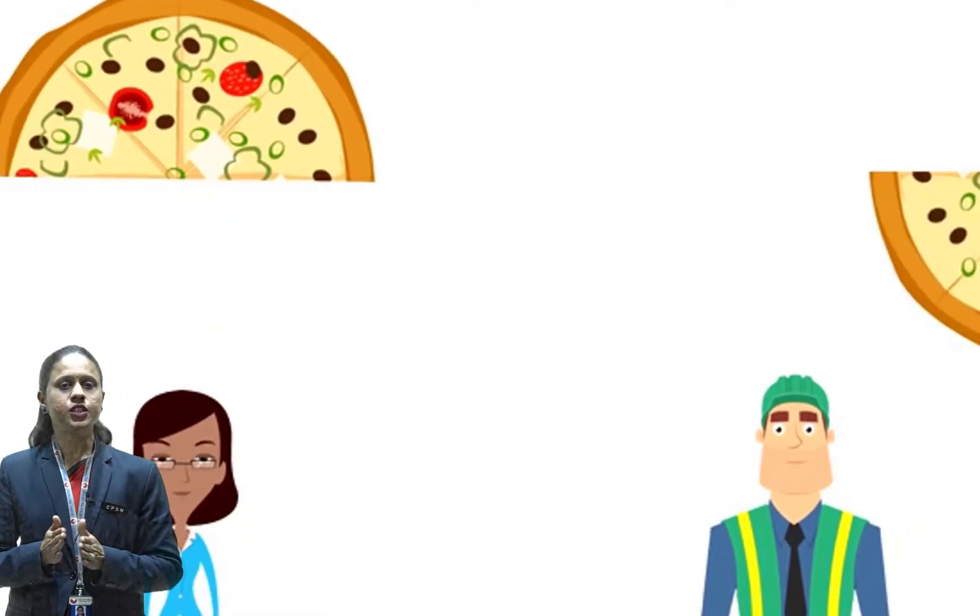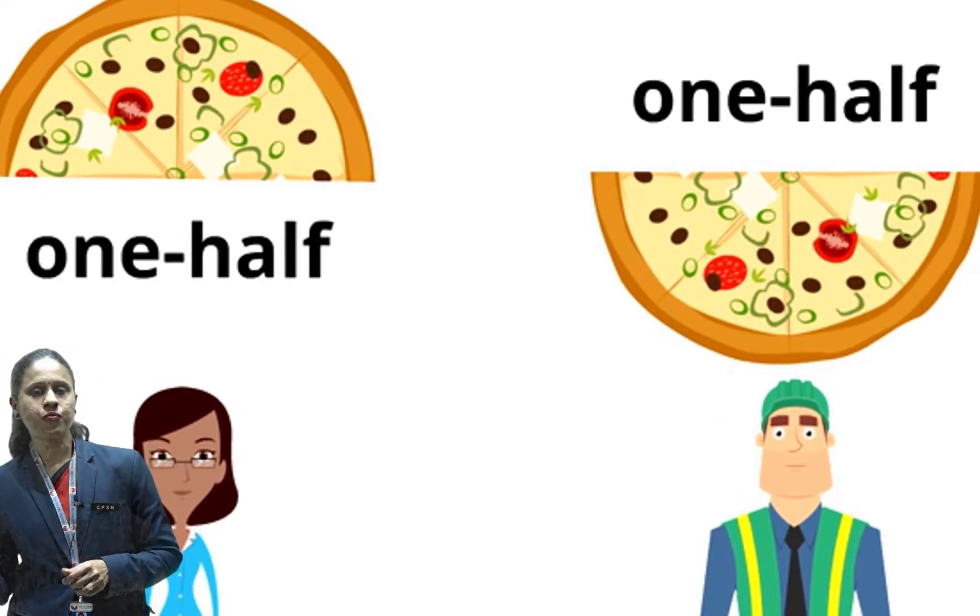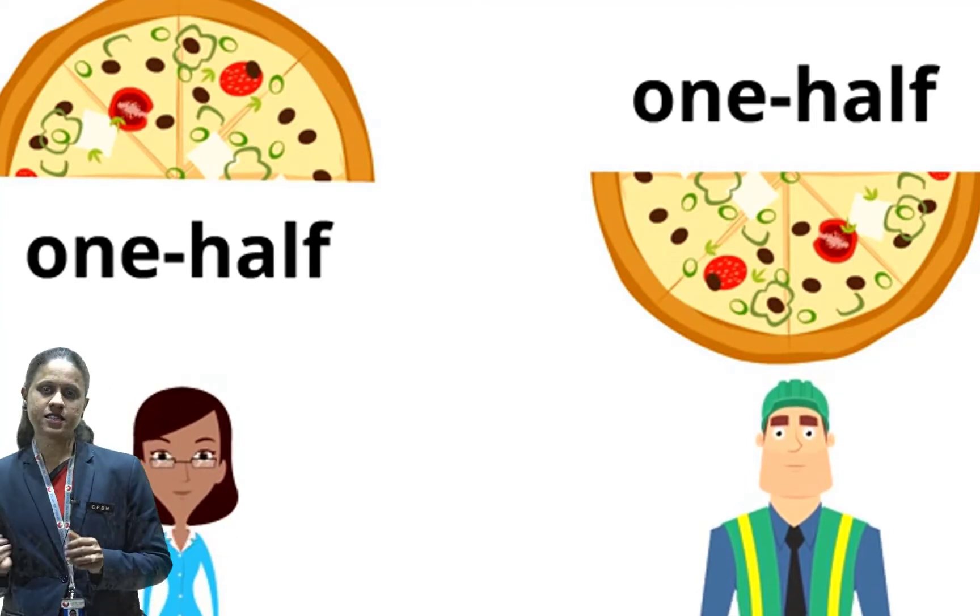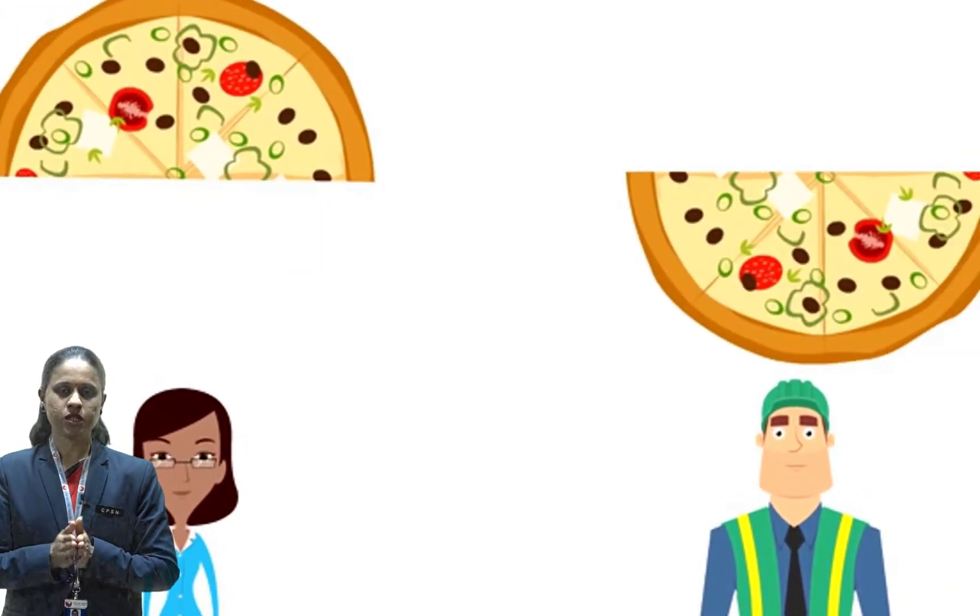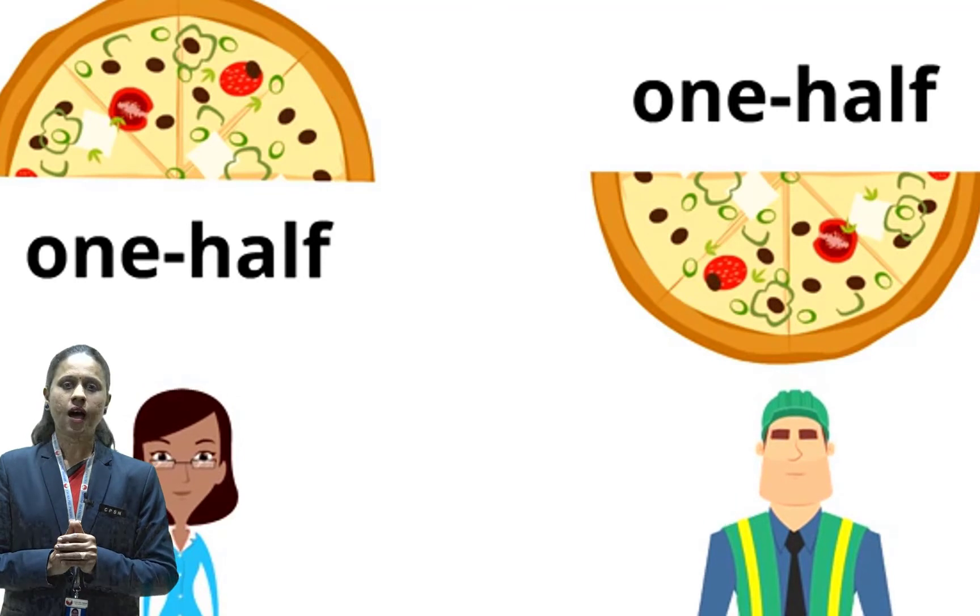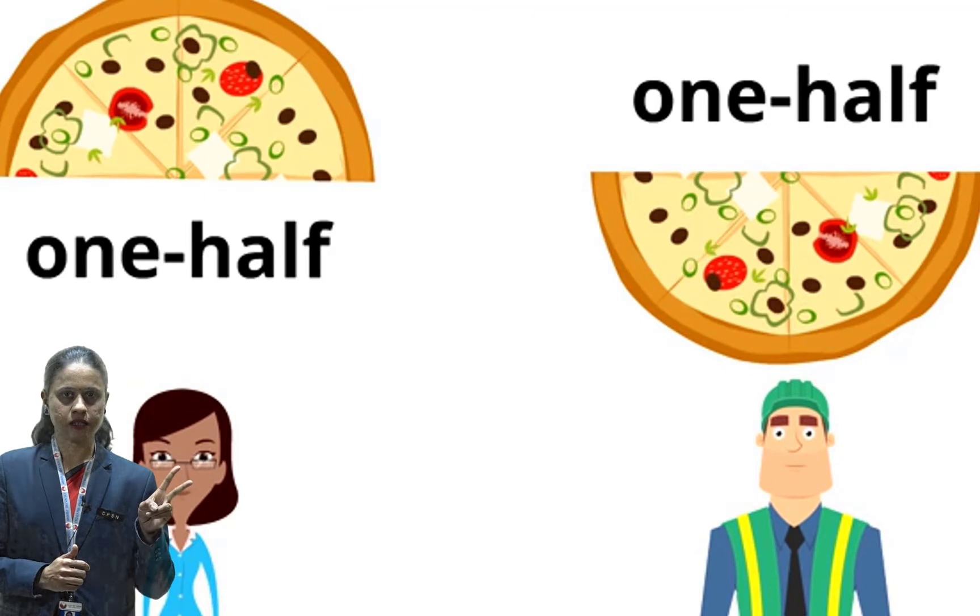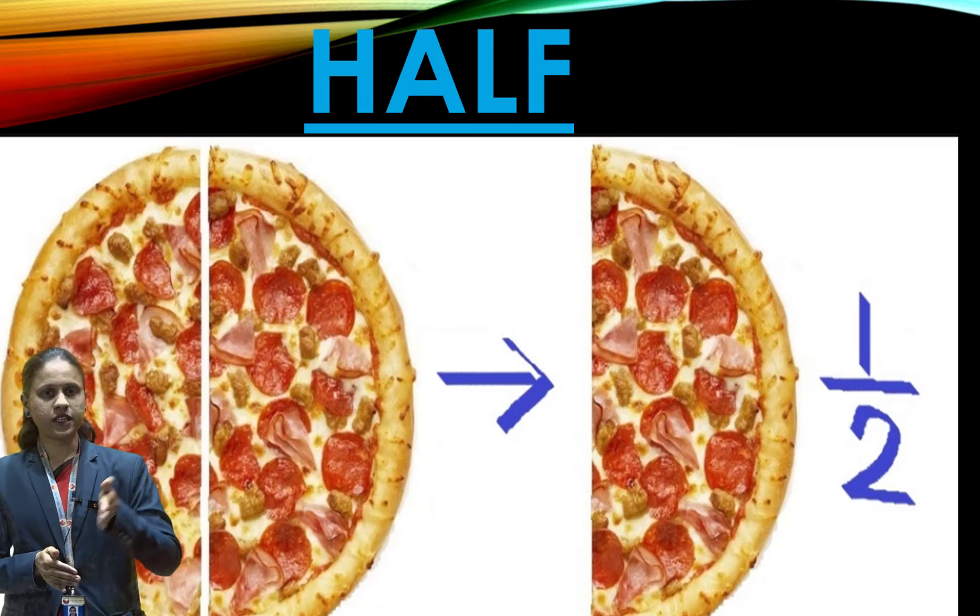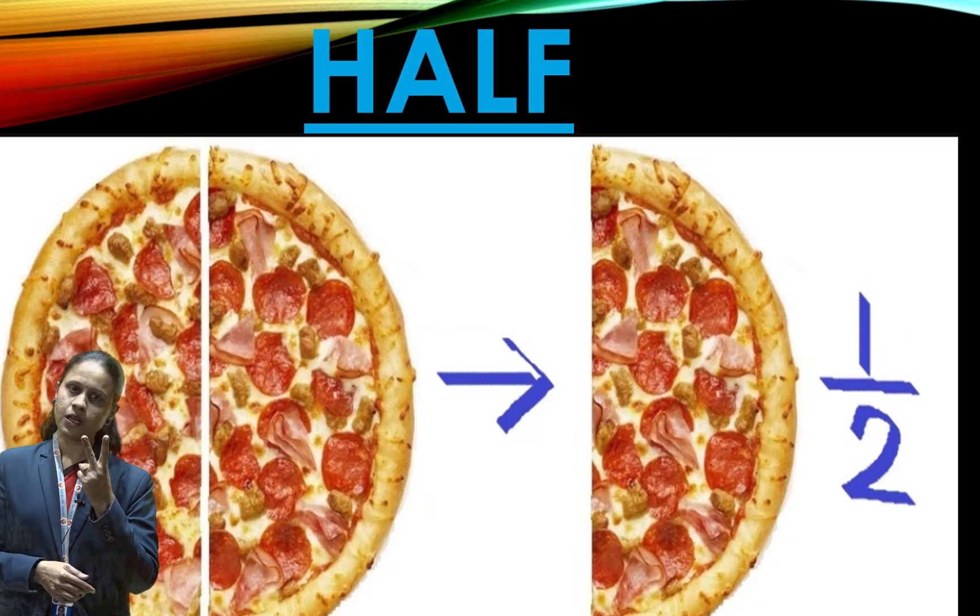Then she cut it into two equal parts. Each part is half of the pizza. You also share with your brother, sister. Like that, Rina also shares with Rahul. One half means one out of two equal parts. When we cut it into two equal parts, then it is divided into two parts.